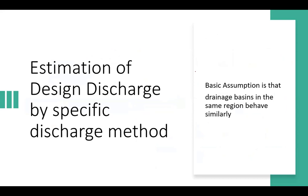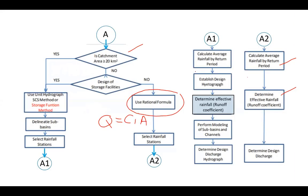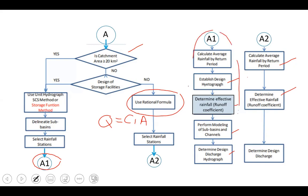If you are going to use modeling, calculate average rainfall by return period. Establish the hyetograph arranged in alternating block method to mimic the rainfall pattern, determine the effective rainfall runoff coefficient, then perform modeling of sub-basins and channels to determine design discharge. This part is more complicated compared to the rational formula and requires more input data.